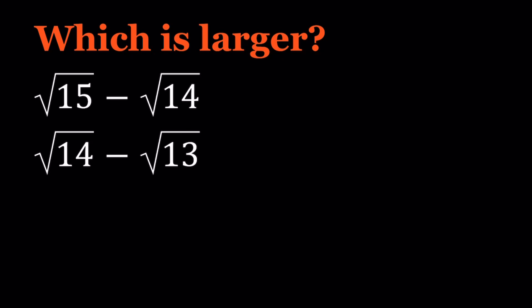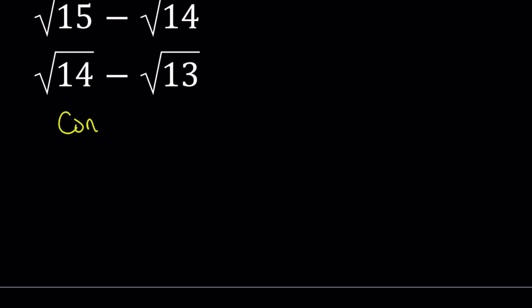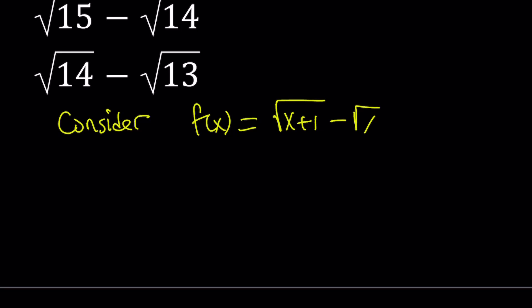Let's consider the following function: f of x equals square root of x plus 1 minus the square root of x. Notice that this function is defined for x greater than or equal to 0, since if x is greater than or equal to 0, then x plus 1 is already going to be greater than or equal to 0. The smallest value, f of 0, is going to be 1. So that's our domain.